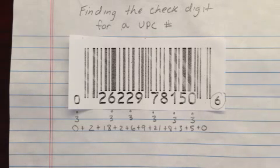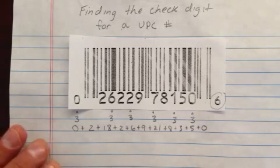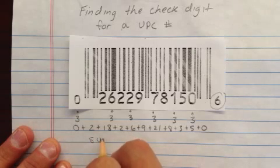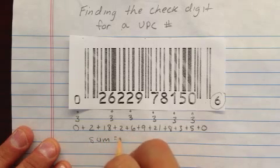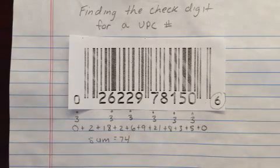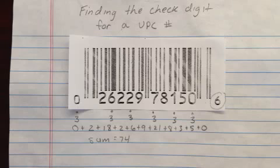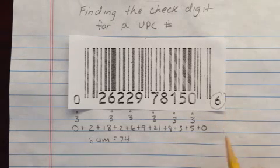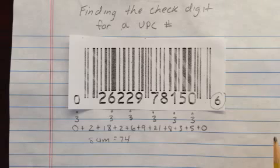I got 74 as a sum. So the sum is 74. Remember that with UPC numbers, you're looking for a number at the end, and when you add a check digit in — or to find it — it has to end up being a multiple of 10.